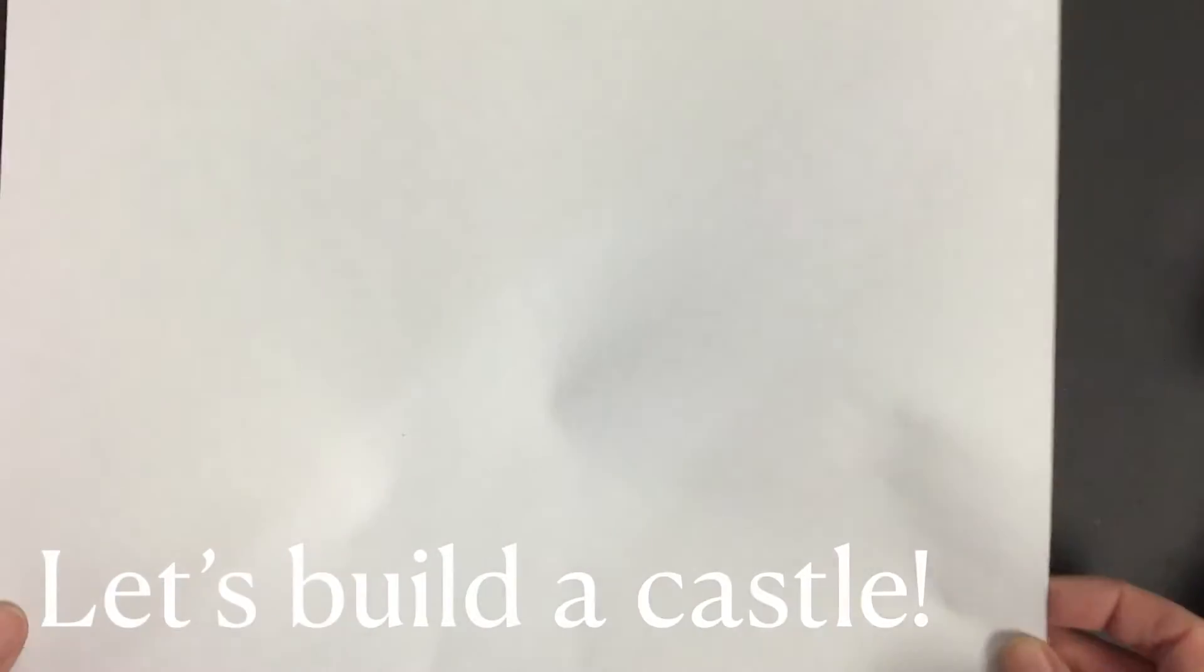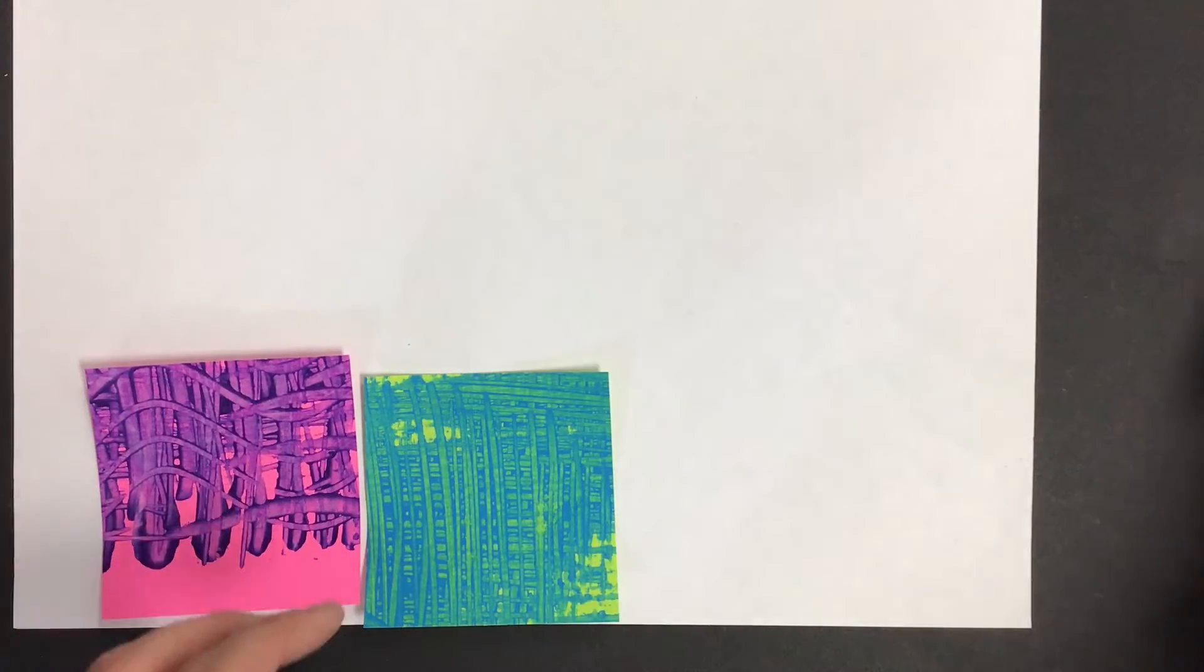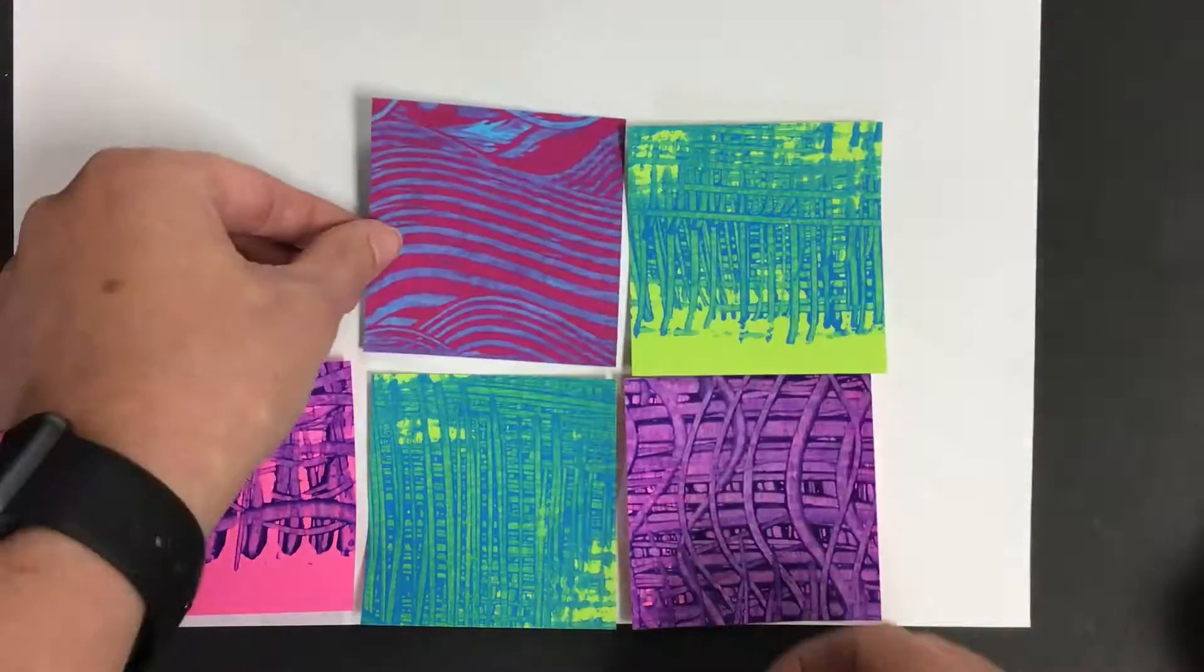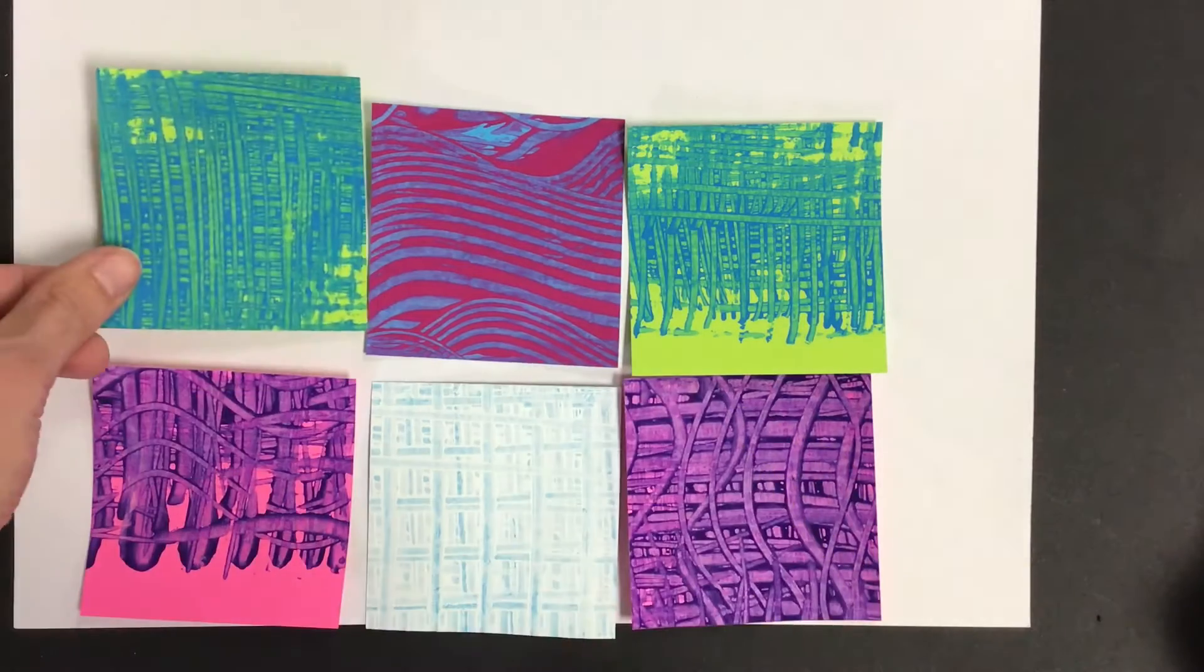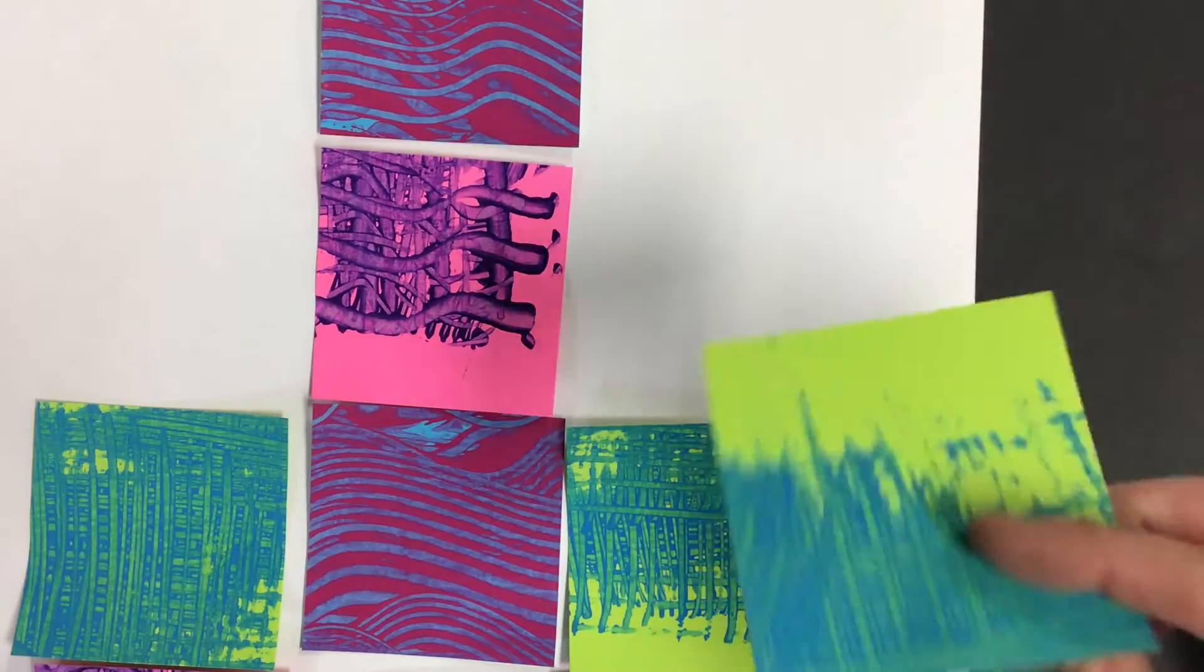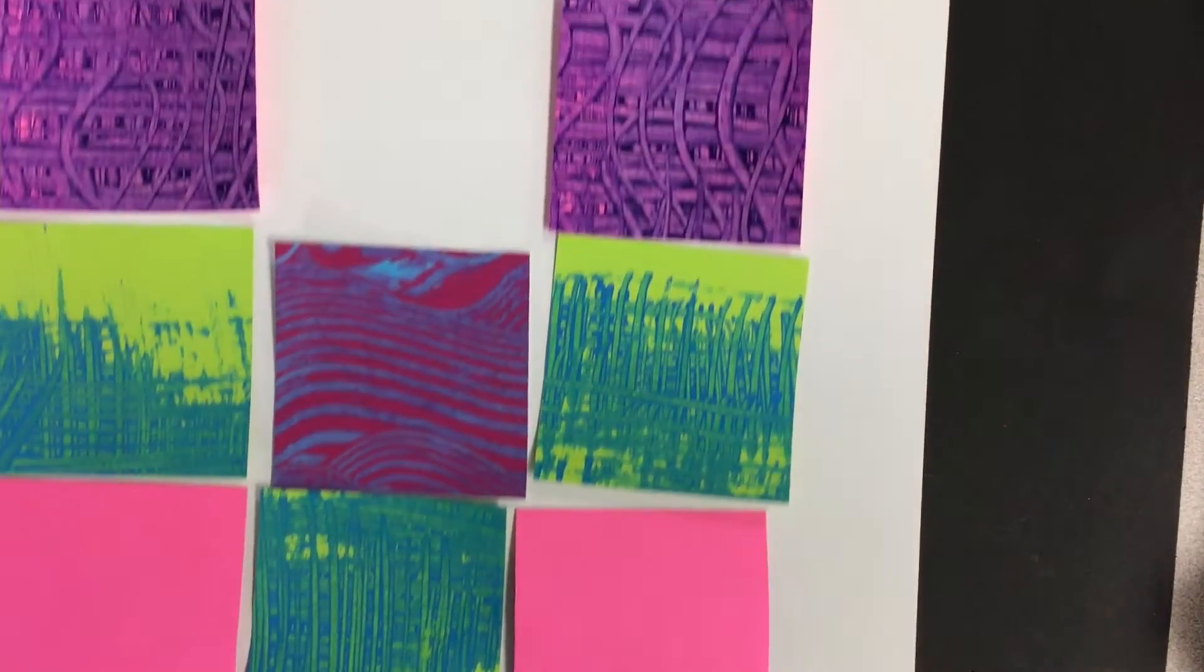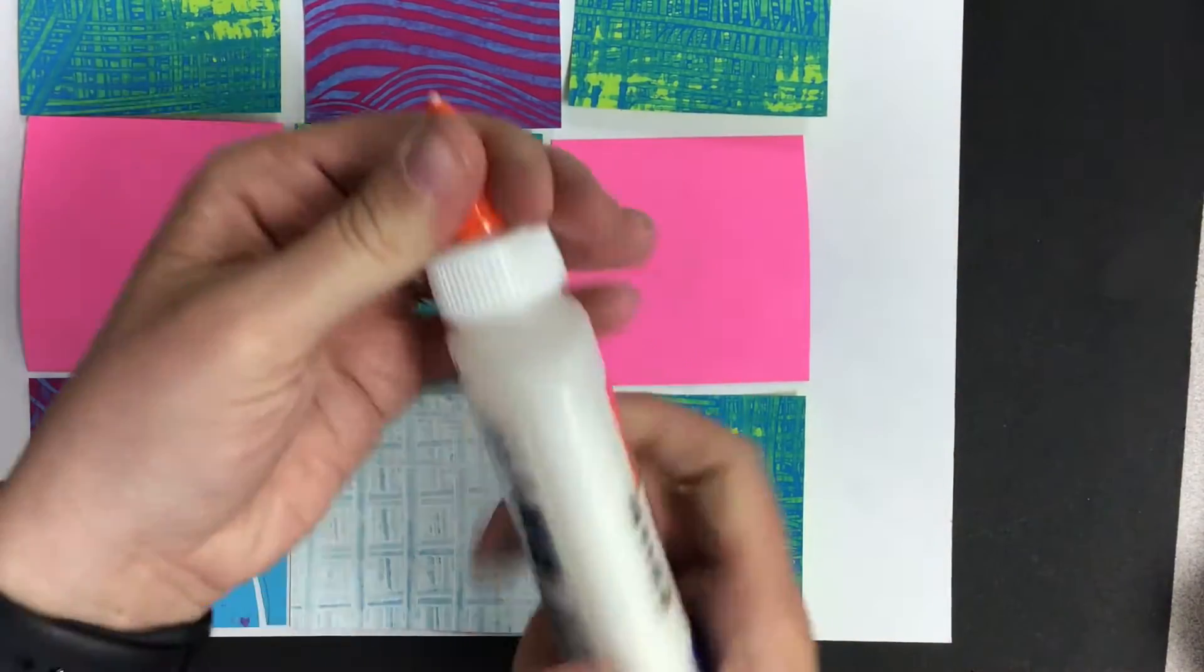Next, you'll get a large white piece of paper and now it's time to play. Let's place these squares carefully on the paper to decide how we want to design our castle. Will there be tall towers? Will there be bridges? You decide.